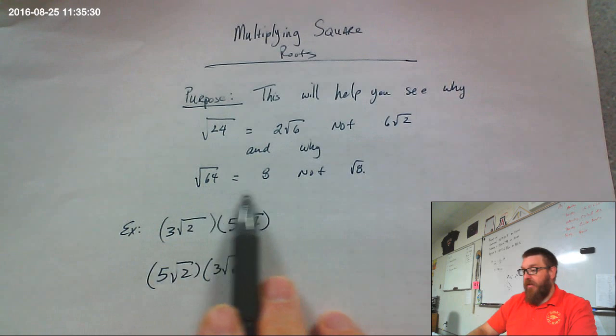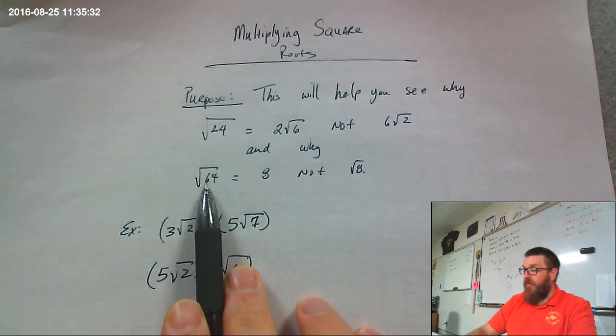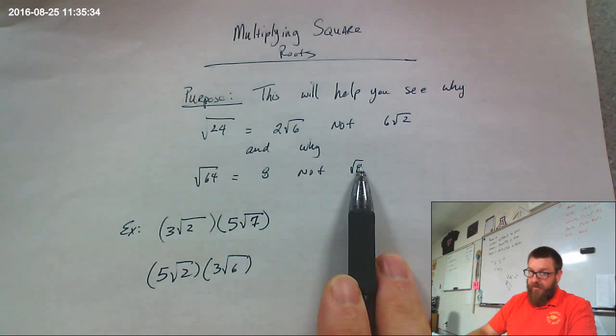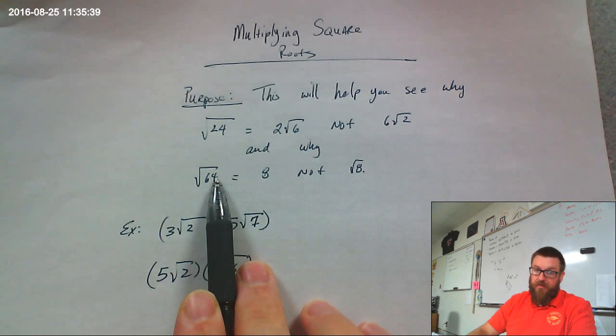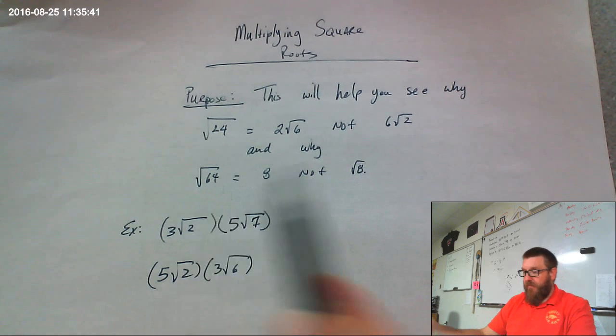Now a lot of people mess this up. They say the square root of 64 is the square root of 8, which is wrong. This means what number times itself is 8. This number means what number times itself is 64. Totally different.